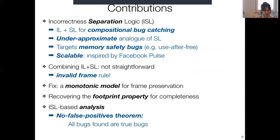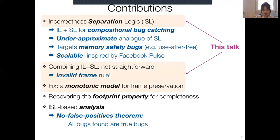We built an analysis based on ISL, and because it's an instance of under-approximate reasoning, we have a theorem stating that whatever bug the ISL-based analysis identifies is a true positive — a true bug. So we have no false positives. Given limited time, I'll focus on ISL and why the extension is non-trivial; more details are in the paper.